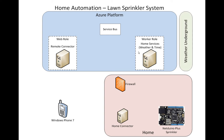The Weather Underground service provides the forecast data. This works the same way — the home connector makes an outbound connection through the firewall to the service bus, saying it's ready for messages. The weather service requests the current weather for my location through Weather Underground, maps that to a service bus remote procedure call, which goes down through the firewall to the home connector and gets routed to the Netduino Plus via an HTTP JSON request. This lets the Netduino sprinkler system know the current weather conditions so it can choose whether to turn on the sprinkler heads based on that.